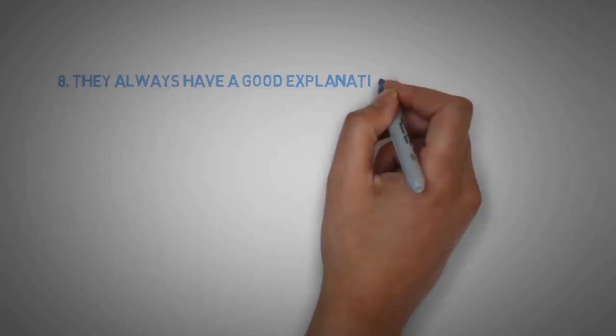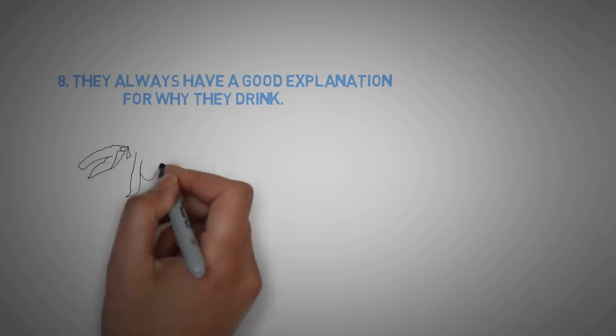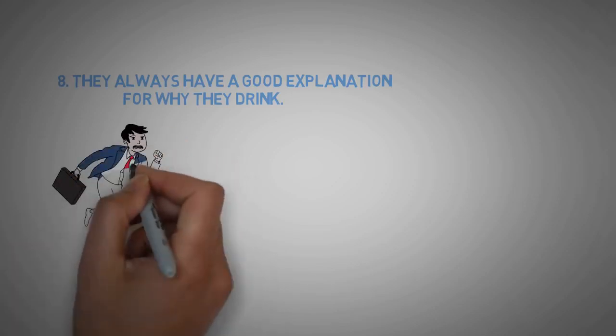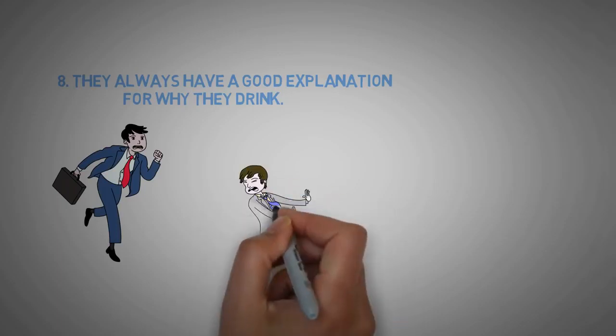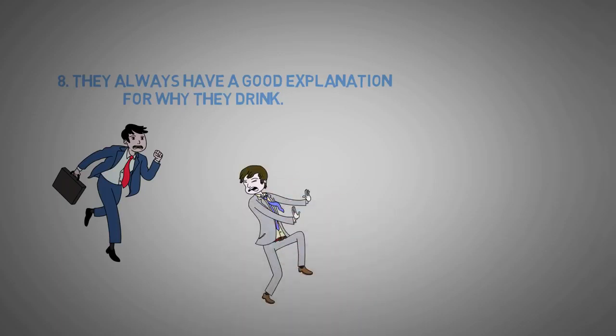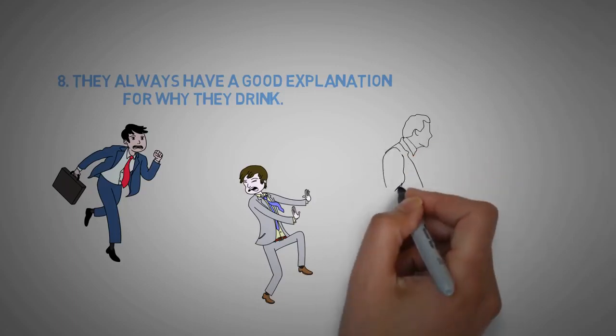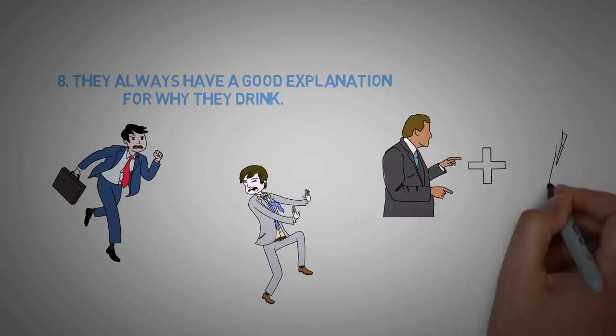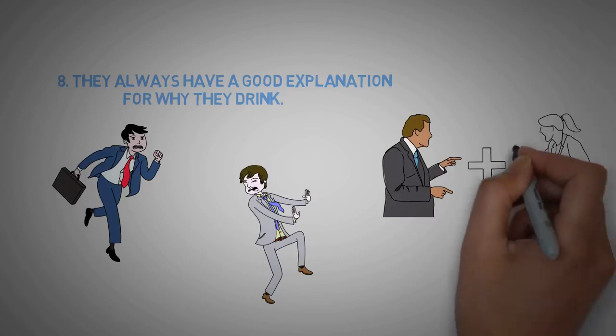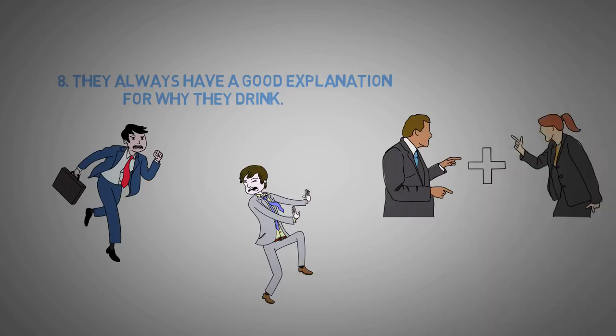8. They always have a good explanation for why they drink. If flight, denial, or aggression is not the chosen mode of avoidance, most alcoholics will have a seemingly rational explanation for their behavior. Stress at work, problems at home, or an abundance of social activities are common reasons to explain their detrimental behavior.